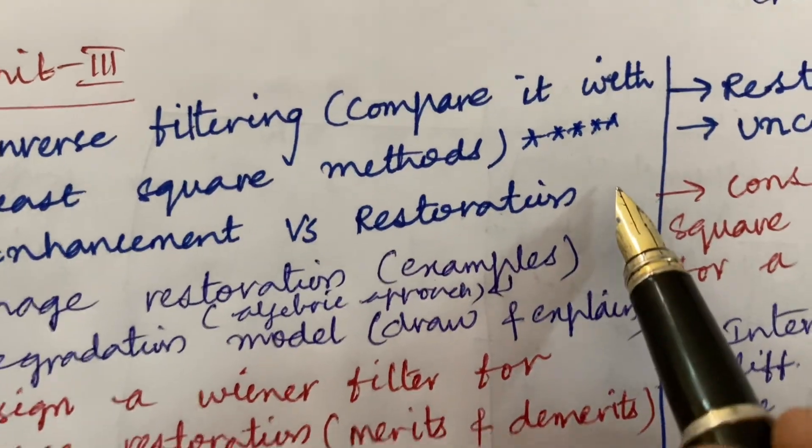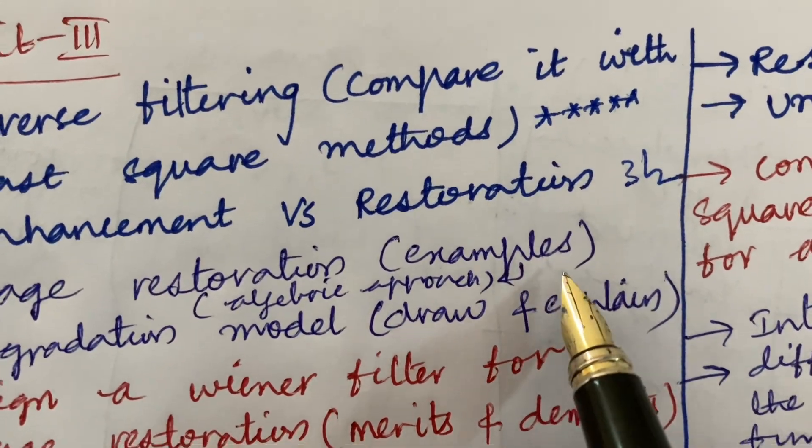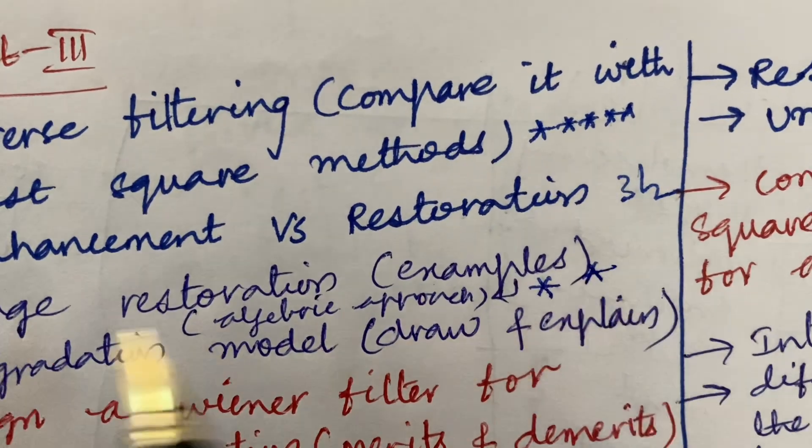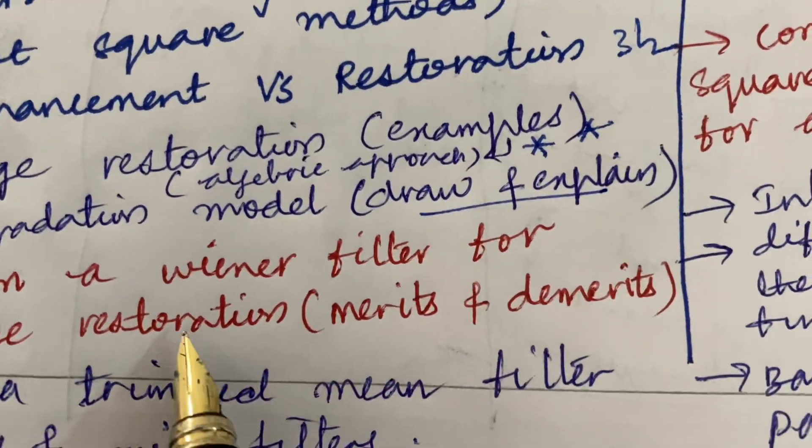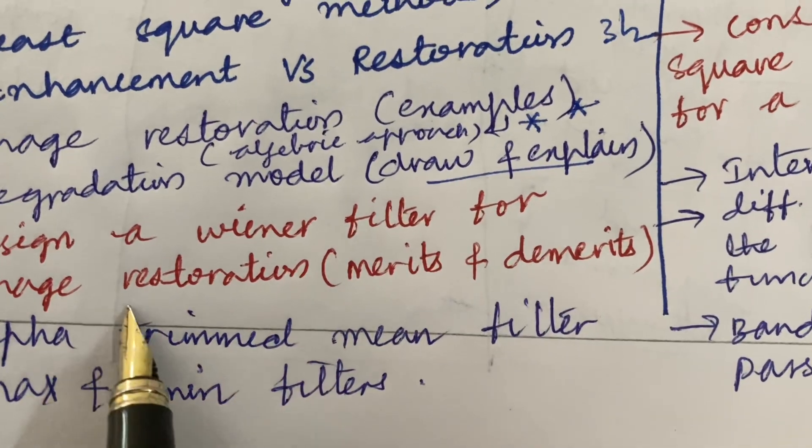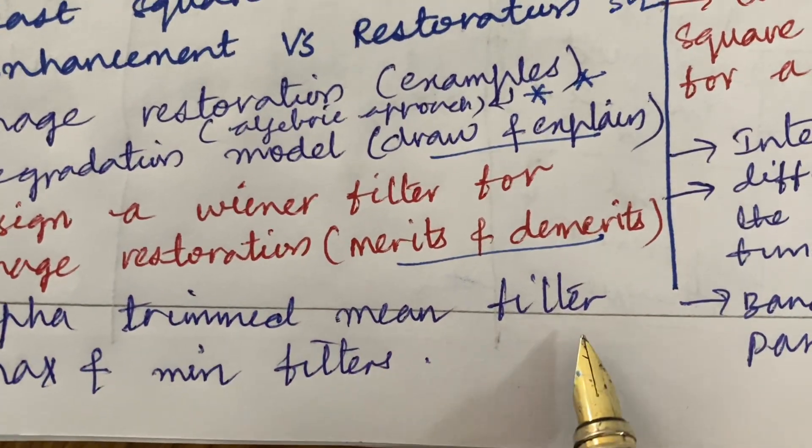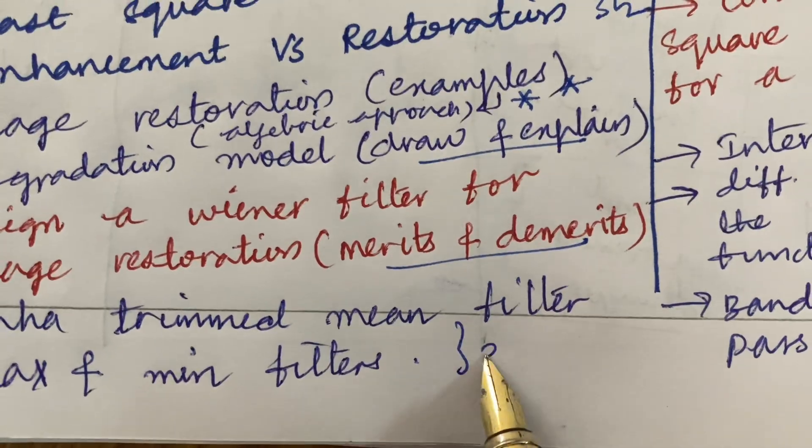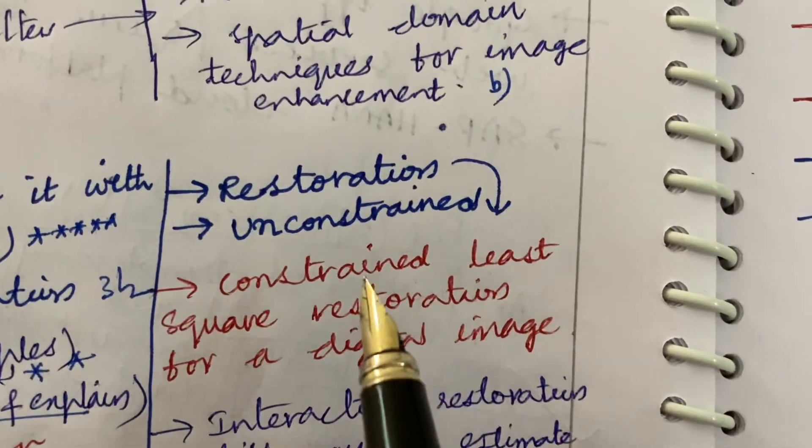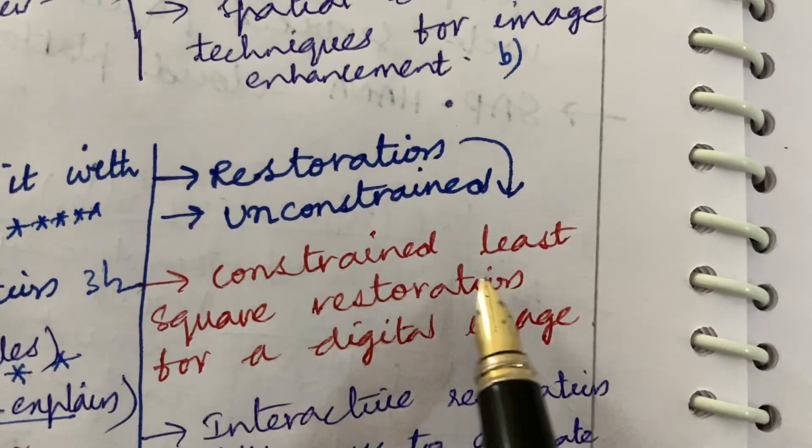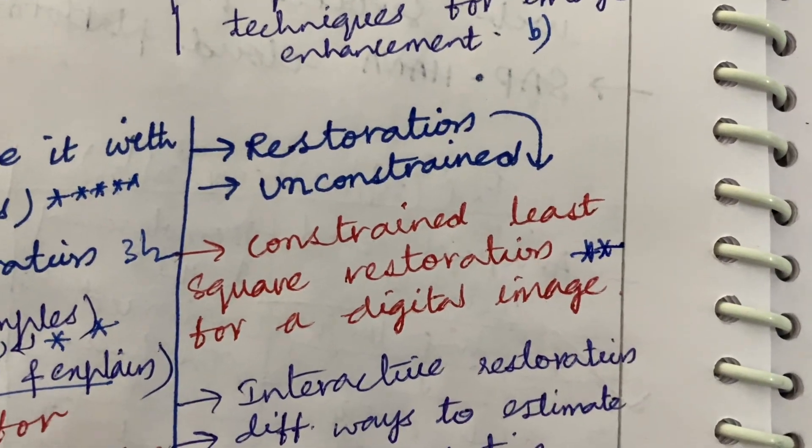The inverse filtering, compare it with the least square method, is said to be a very very important question. Enhancement versus restoration is said to be a 3 mark, 2 mark question. Image restoration along with the example using algebraic expression is said to be a 6A question and degradation model, draw and explain it, and the design a Wiener filter for image restoration. Merits and demerits may be a B equation and alpha trim mean filter and max and minimum filters are said to be 2 and 3 mark questions for this time in the question paper.